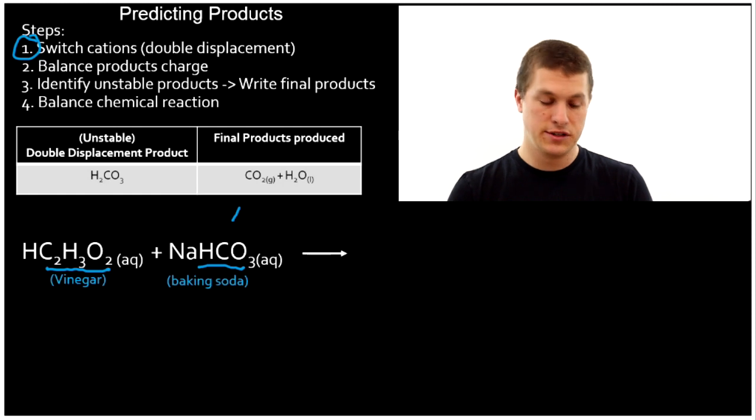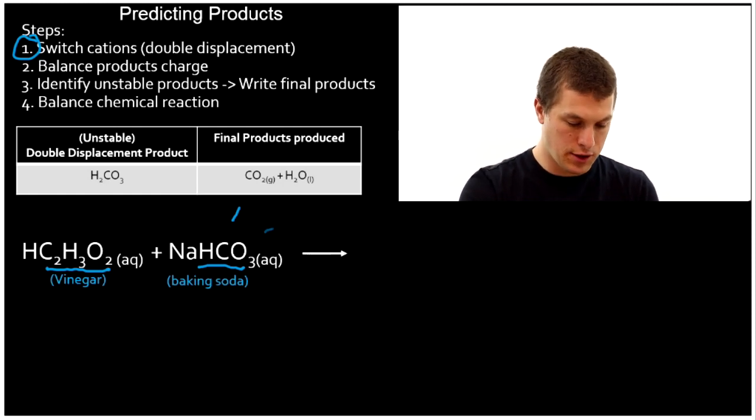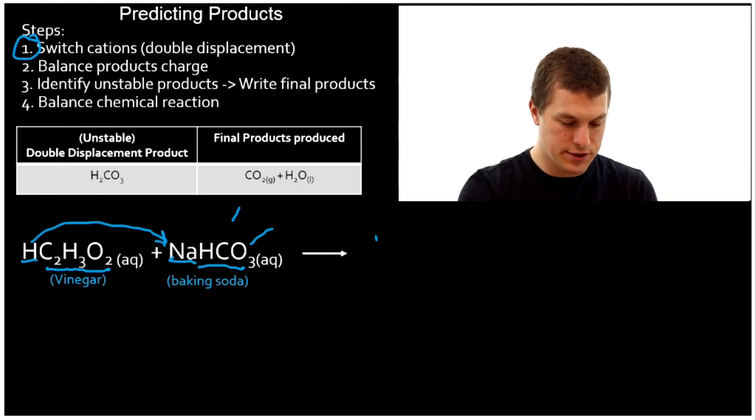Once you can identify those, you can see that the cations, the positively charged things, are the sodium and the hydrogen. And we're just going to switch those. That's the very first step.